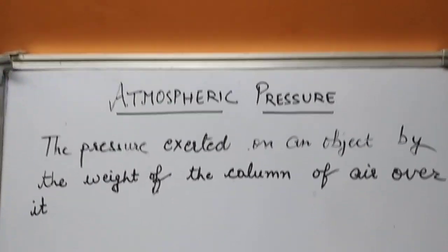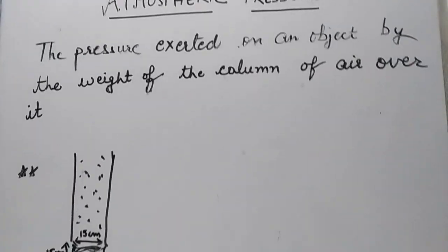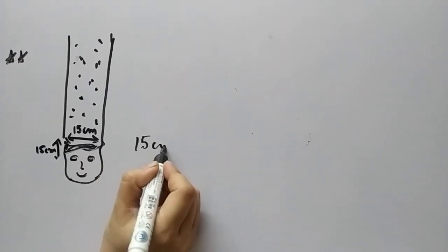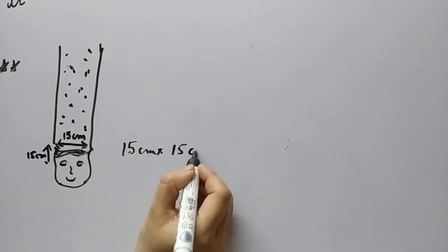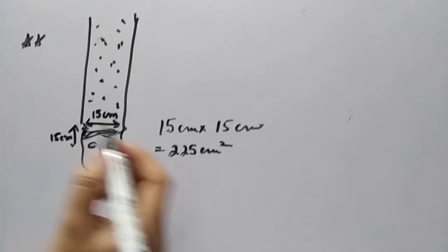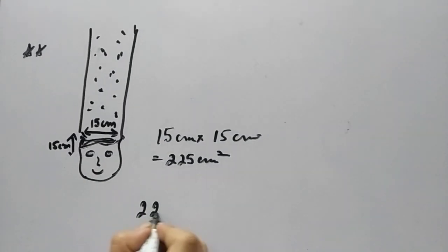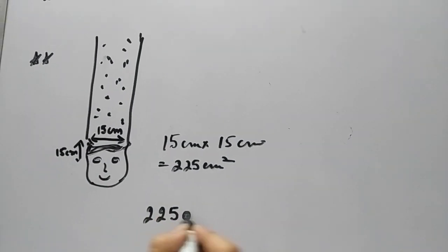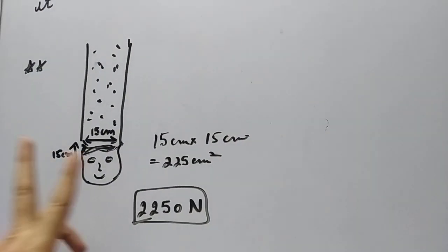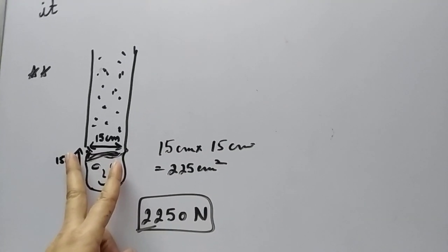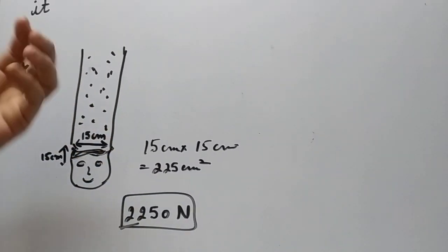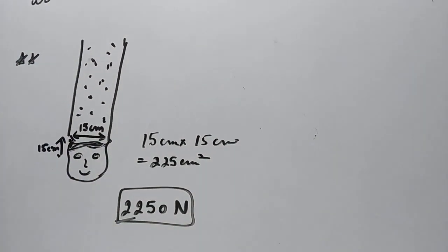Let's talk about our own body. Suppose the area of a person's head is around 15 centimeters by 15 centimeters, approximately. That comes to around 225 square centimeters. So roughly if it is calculated, about 2250 Newtons of force is exerted by the air over this particular area of our head. You can see this amount of force is exerted, meaning a lot of air is present over our head.